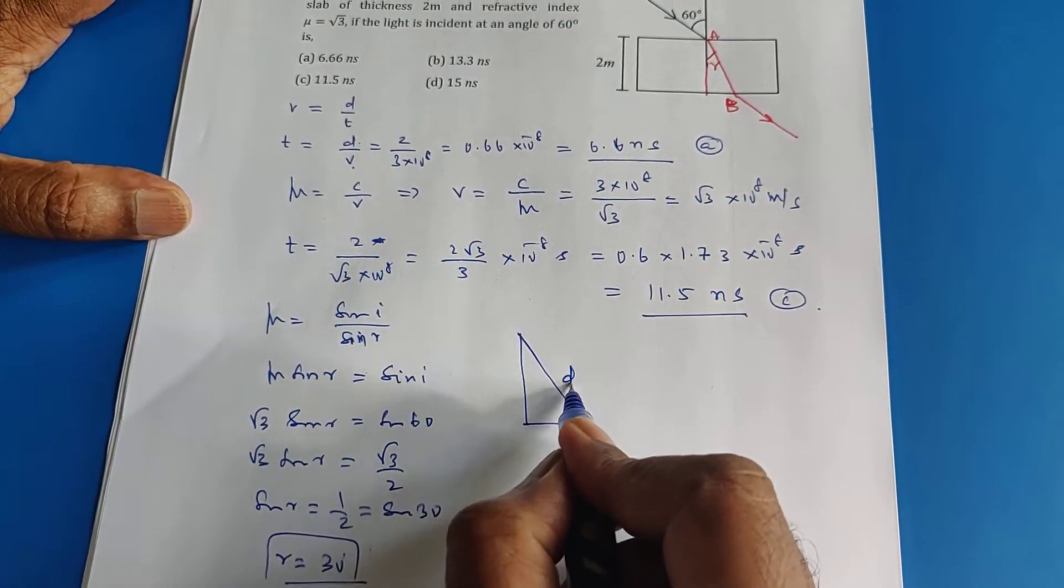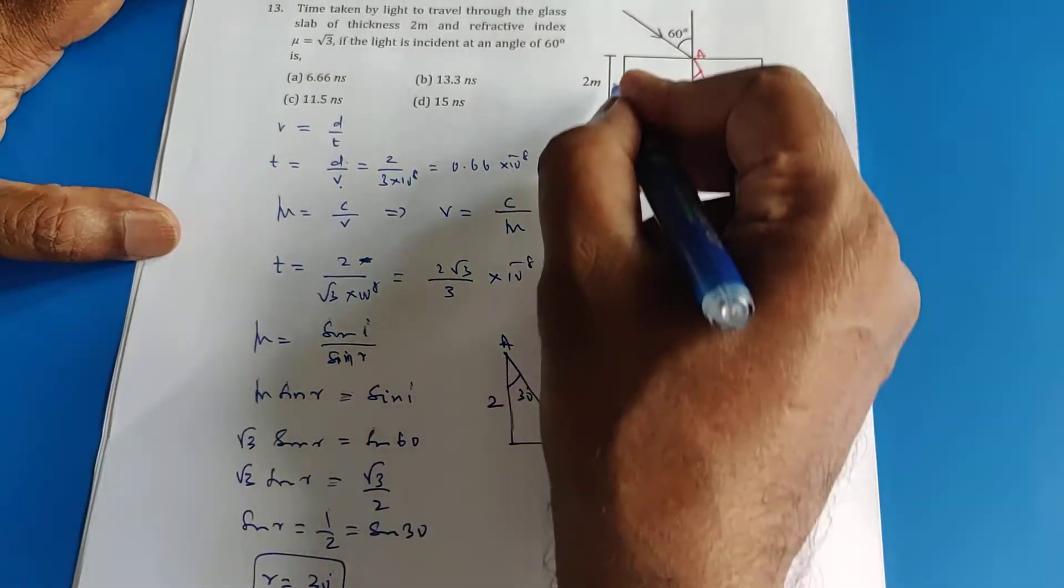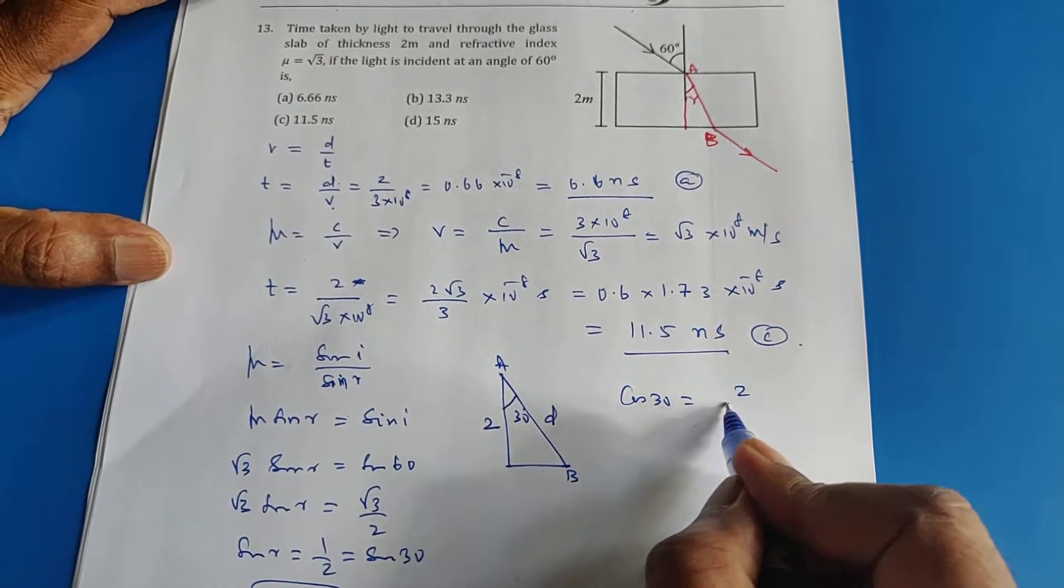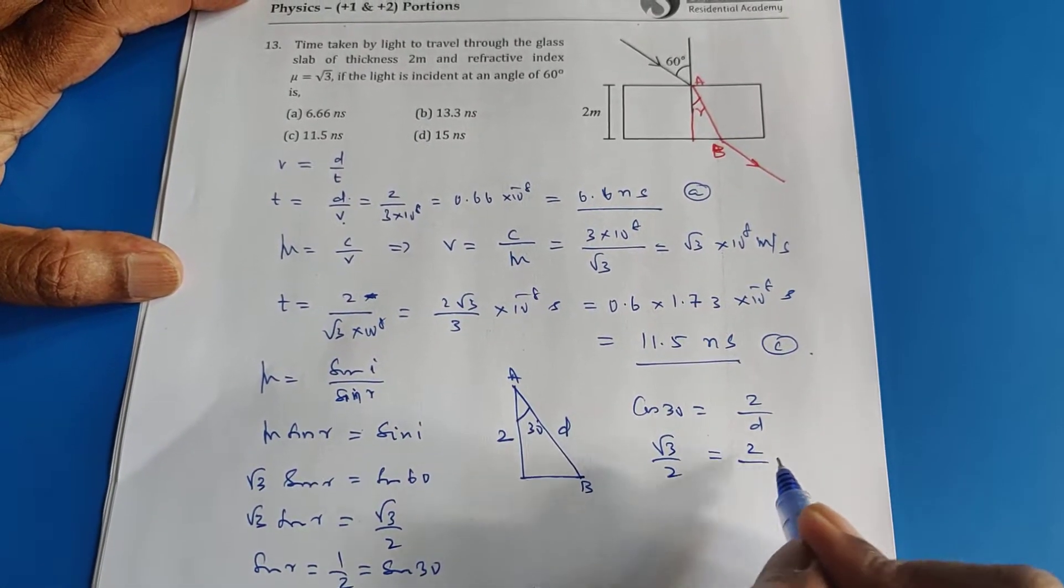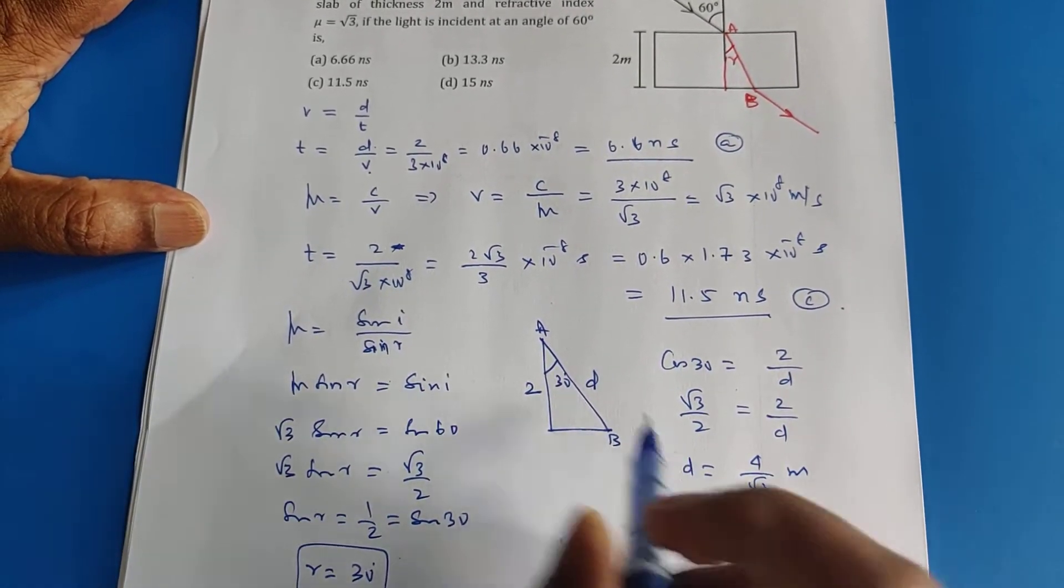Then you draw that triangle here. This is what you want, AB. This is 30 degrees. This is 2, the straight distance. Now take cos 30. What is cos 30? 2 by D. Cos 30 is root 3 by 2. So D value is 4 by root 3 meter.